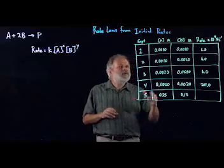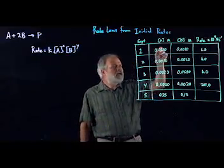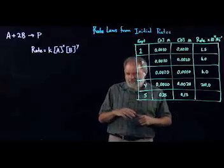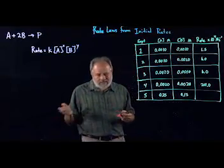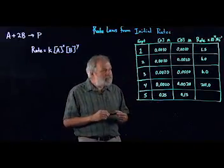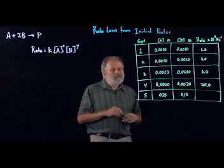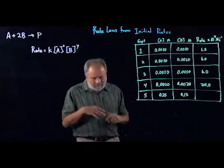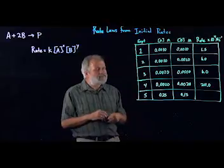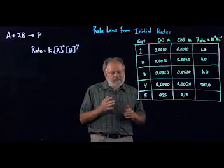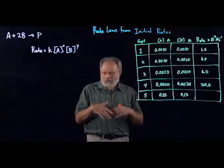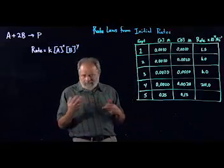We'll pick the first two experiments. A is not changing, B is being more or less doubled. If B gets doubled, we expect the rate to change as some power of two for the B part. It might change not at all, in which case it would be a zero order reaction. There's no effect of the rate from changing concentration in B. Or it could be first order, in which case we expect to see the rate double.